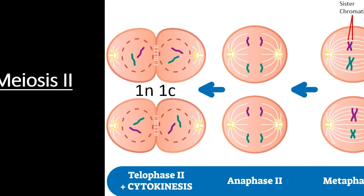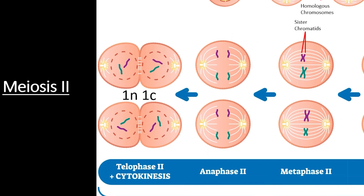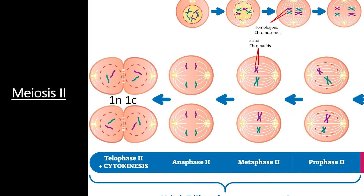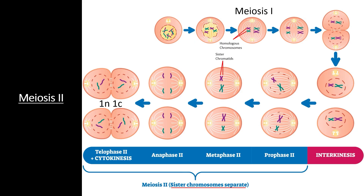Since the sister chromatids are dividing, meiosis II is a lot like mitosis. However, since the homologous chromosomes have already been separated during meiosis I, the cells enter meiosis II with a different level of ploidy than the cells entering mitosis. Cells entering mitosis and meiosis I are 2N diploid and have four copies of each chromosome. By contrast, cells entering meiosis II are 1N haploid and have only two copies of each chromosome. In the next section, we'll analyze how the processes of meiosis I and II increase the genetic variability of each subsequent generation.